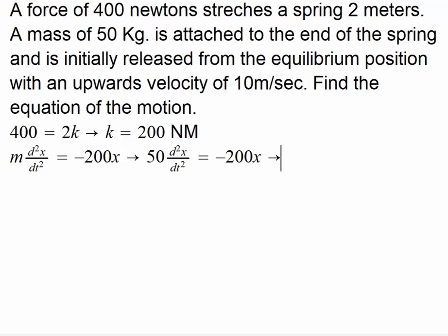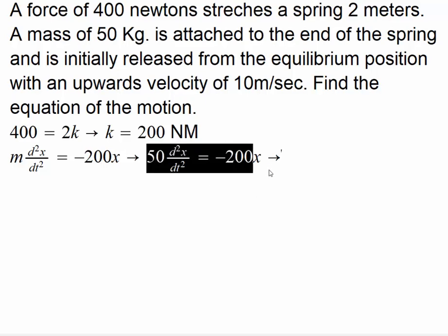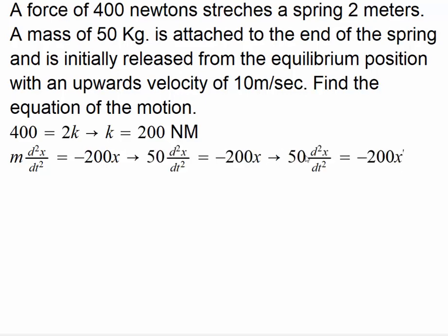So we got 50 times d²x/dt² equals negative 200x. If we simplify this, dividing the equation by 50, we get d²x/dt² equals negative 4x.